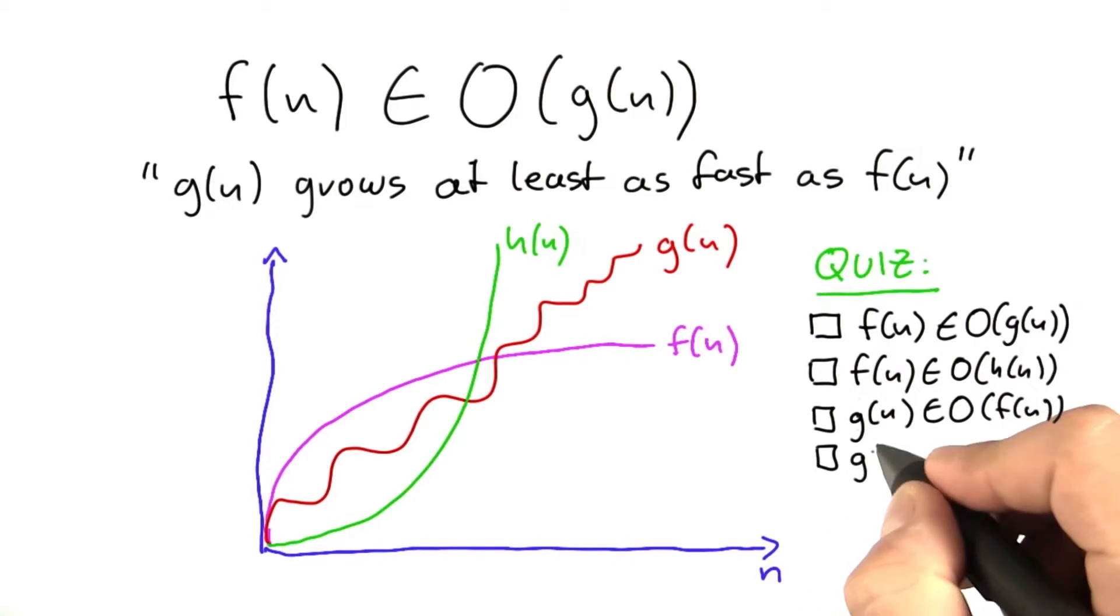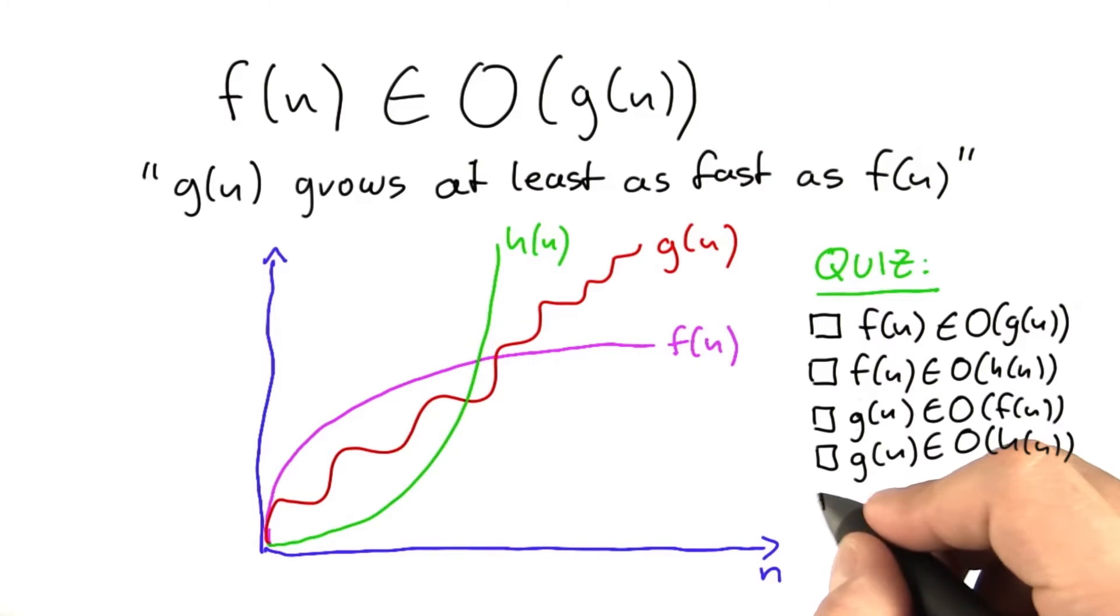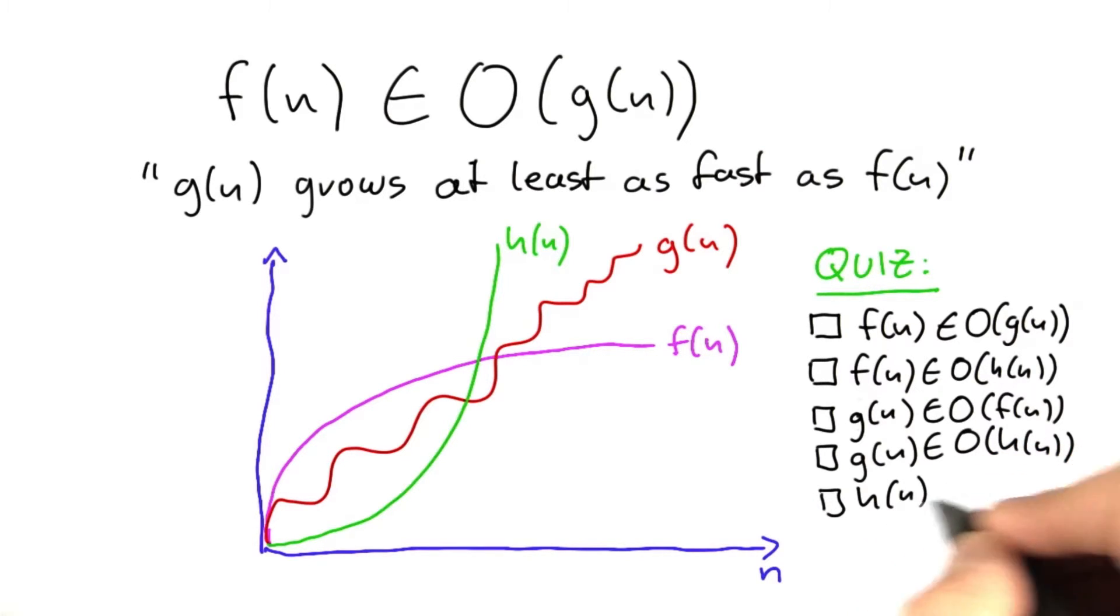Is g(n) contained in O(h(n))? Is h(n) contained in O(f(n))? Or is h(n) contained in O(g(n))?